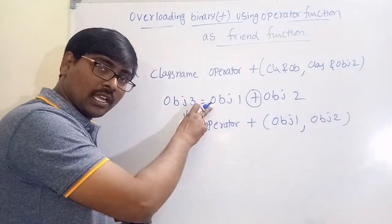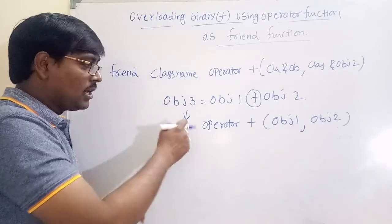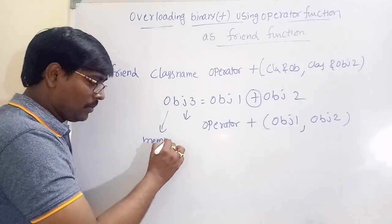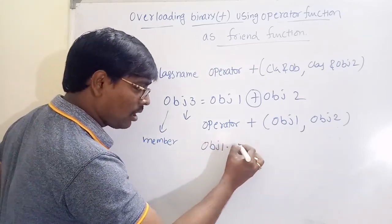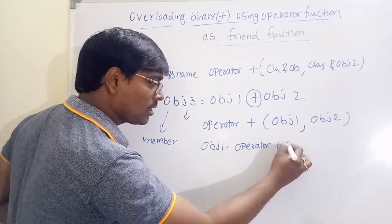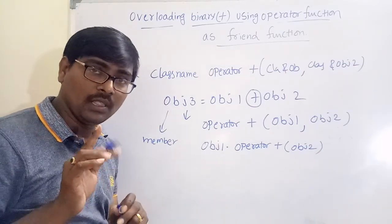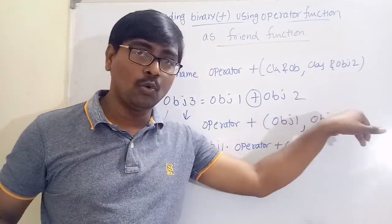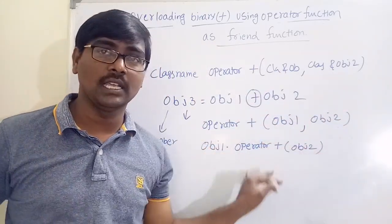When you write that statement, the system calls it as a friend function. Suppose if you are using a member function, the system calls it as: object1.operator+(object2). You have to observe the differences: if it is a friend function, it passes two objects; if it is a member function, it passes only a single argument.